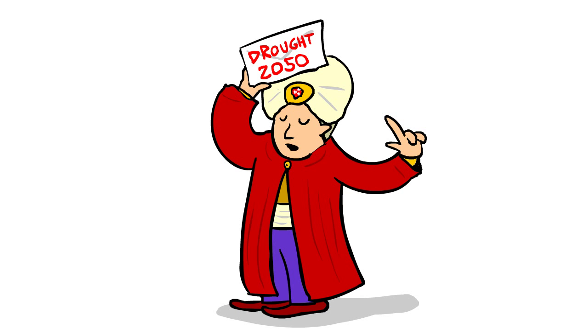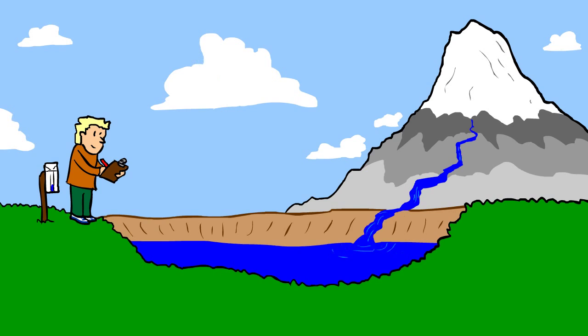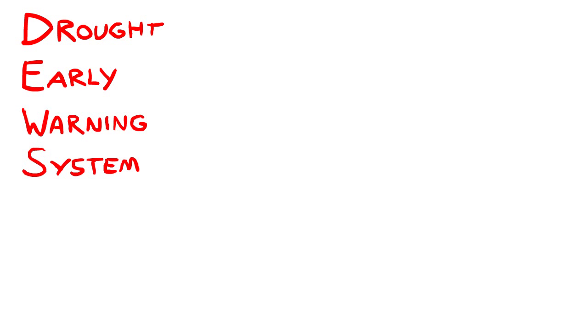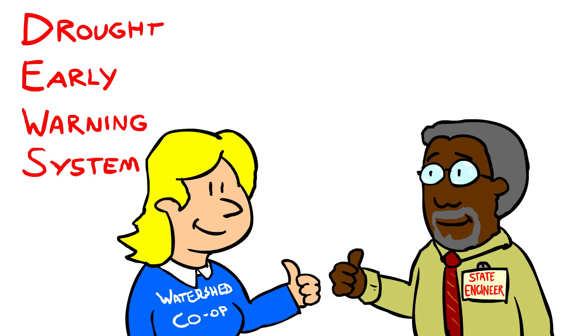Since forecasts of developing drought have not yet been perfected, an accurate depiction of current conditions and their trends, along with a keen awareness of local climate conditions, can serve as an effective drought early warning system for resource managers and decision makers.